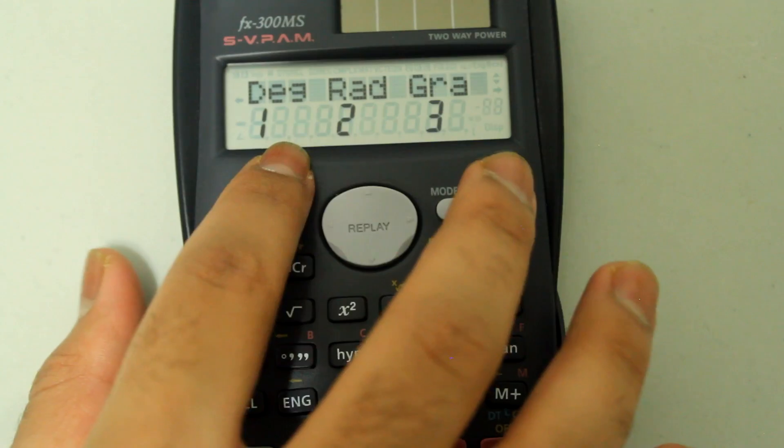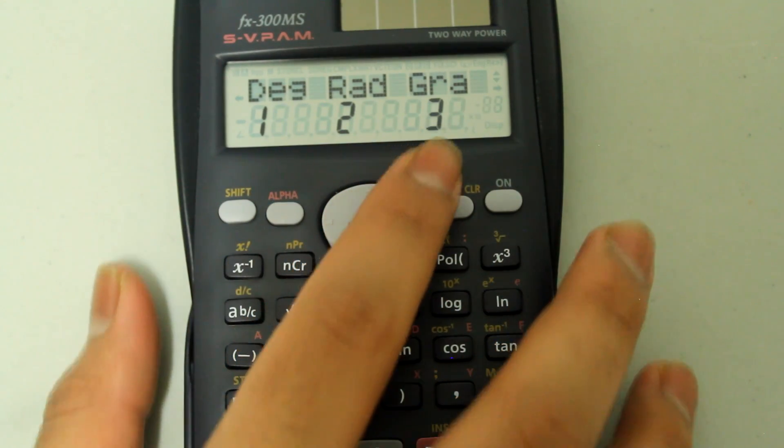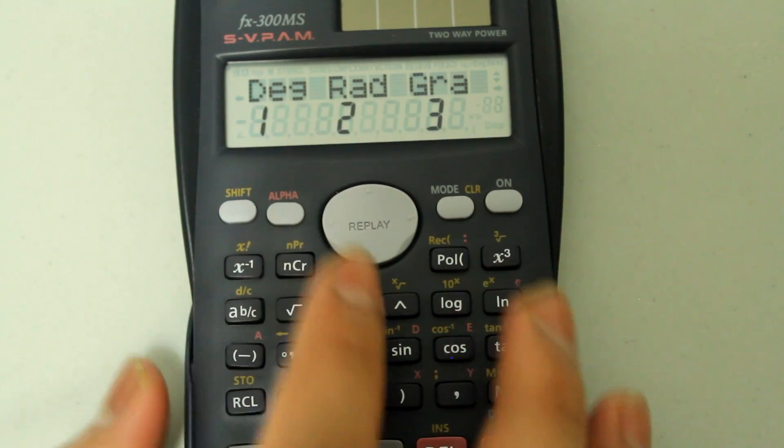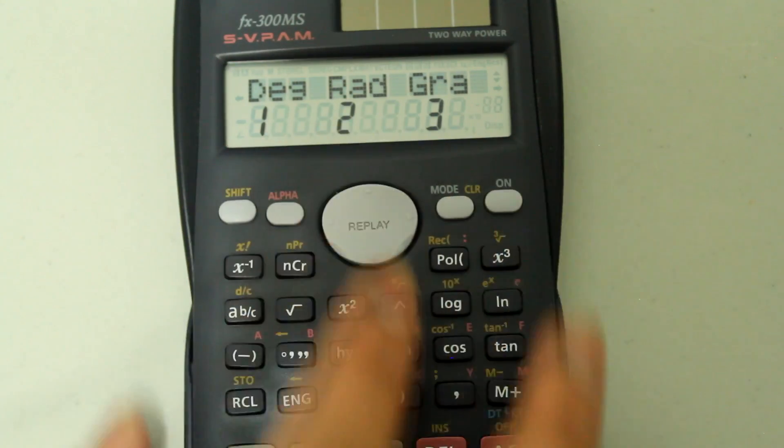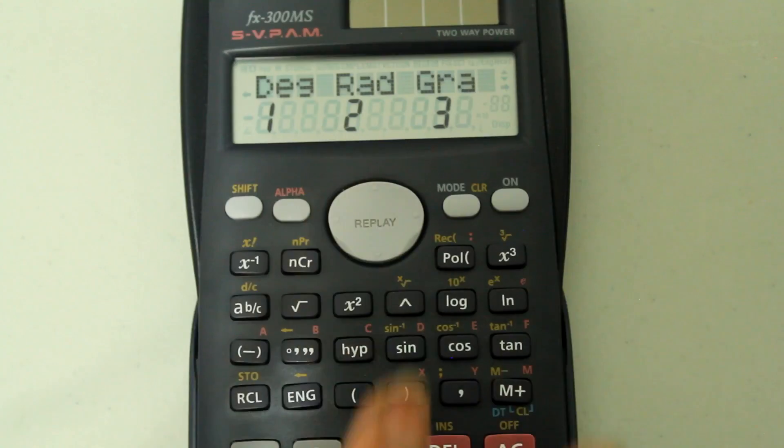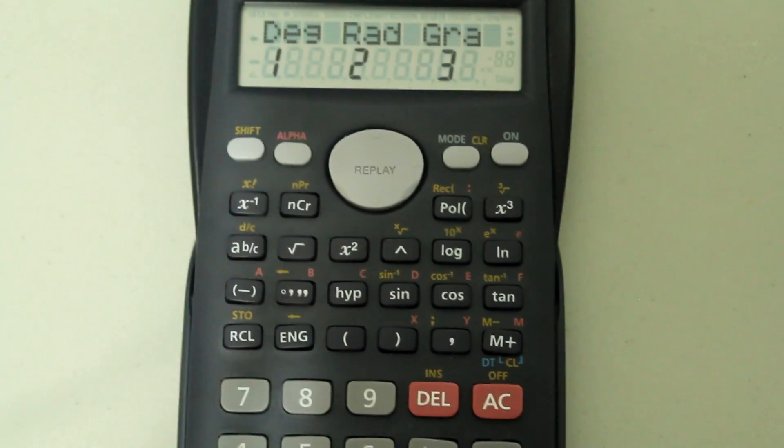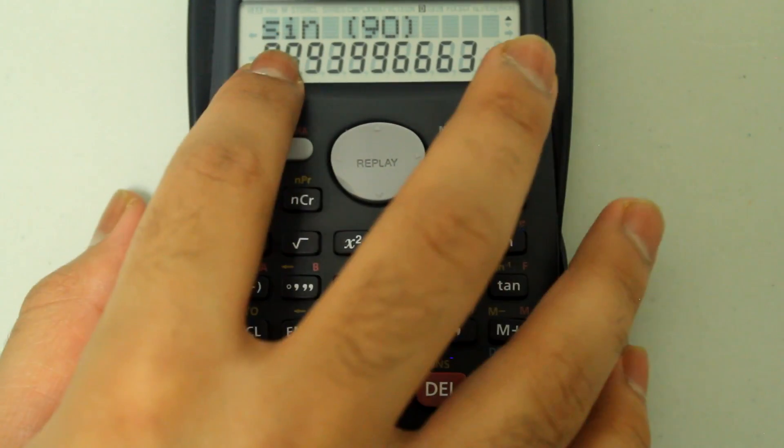To choose any of these options, just type in the corresponding number on the number pad. Degrees is 1, so if I press 1 on the number pad, I go back to this screen. Notice that the answer is still in radians.